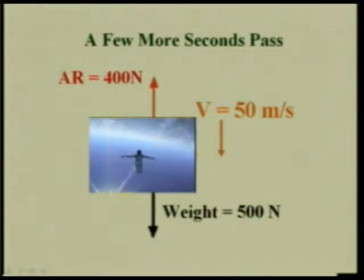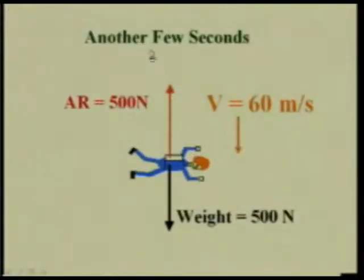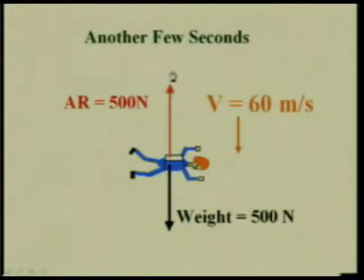A few more seconds pass — the air resistance increases to 400 Newton, with weight still at 500 Newton, and velocity is now 50 meters per second. A few seconds later, air resistance reaches 500 Newton, which equals the weight of the skydiver, and the velocity is 60 meters per second. The upward force due to air resistance equals the downward weight. The two forces balance, and this velocity is called the terminal velocity — the velocity at which the weight of the skydiver is balanced by the force due to air resistance.